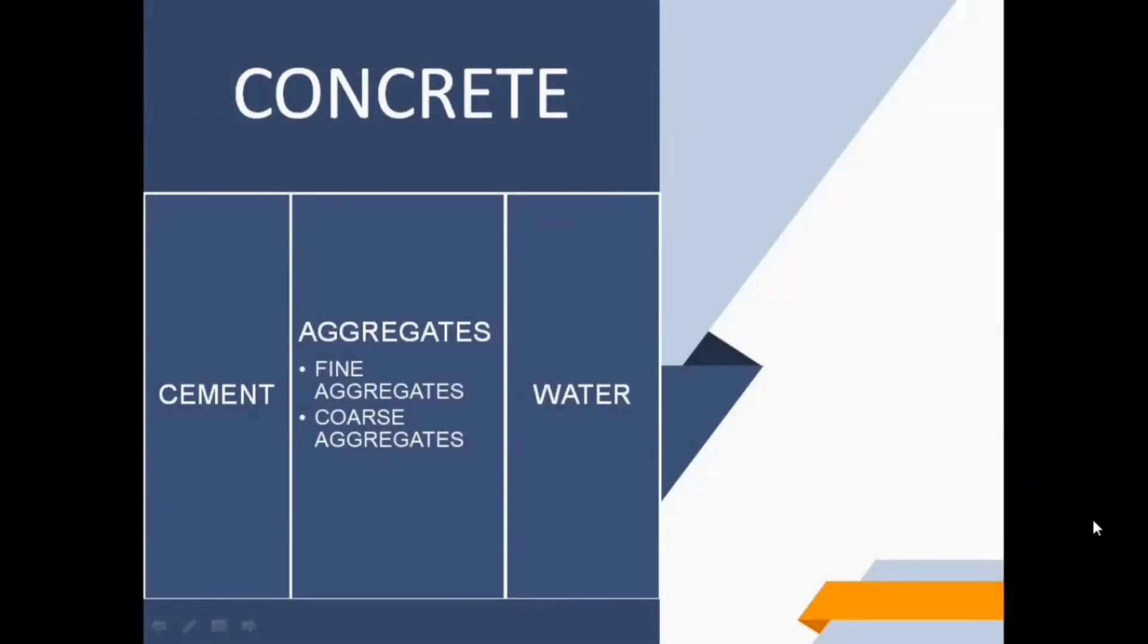Basic elements of concrete are cement, aggregates, and water. Aggregates are divided as fine aggregates and coarse aggregates. OPC cement grades are as following: OPC grade 33, 43, and 53.